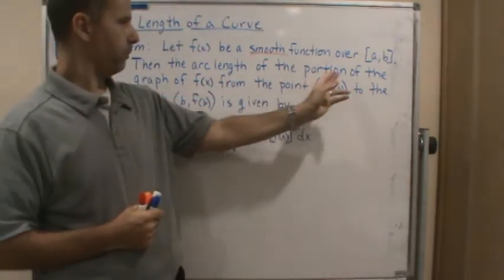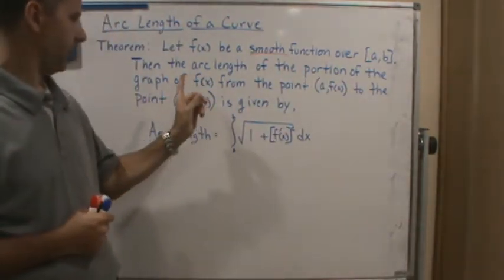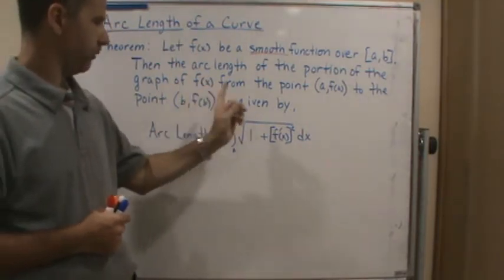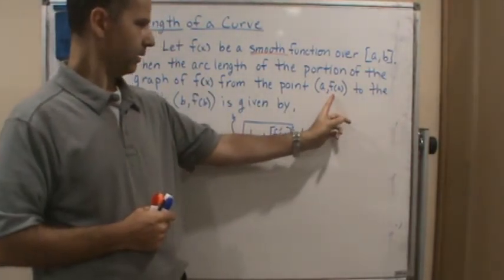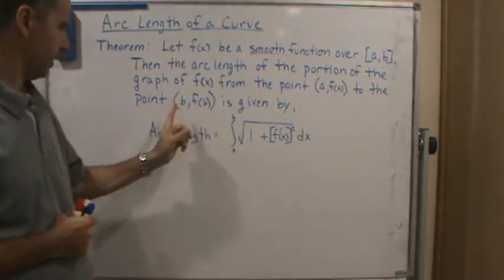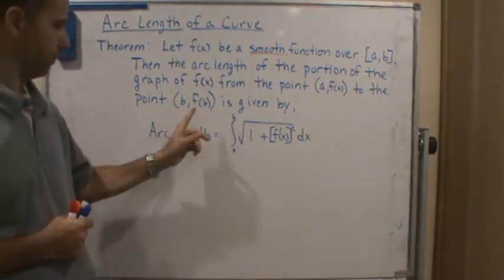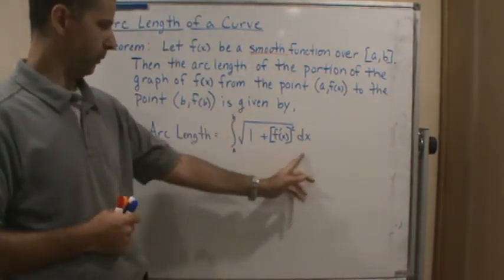Then the arc length of the portion of the graph of the function f of x from the point a comma f of a to the point b comma f of b is given by this formula.